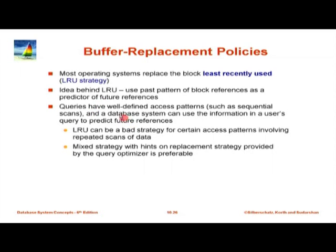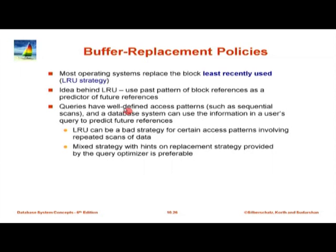A database system knows exactly what is going on. If you are running a query, the database system knows what data it will access. It knows a query is going to read every single block of a 10-gigabyte relation. If you use LRU and are reading sequentially, you will not read the first block again until you finish the whole relation. LRU turns out to be a very bad idea for relation scans — it evicts all useful data and keeps useless data in the buffer.